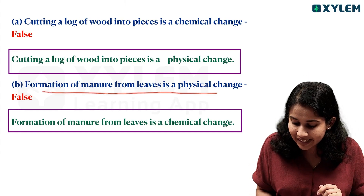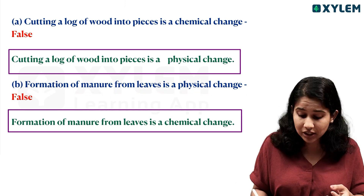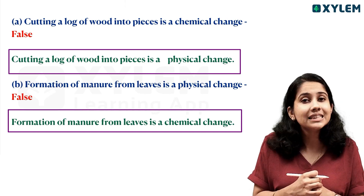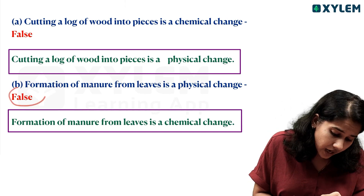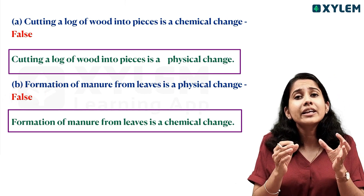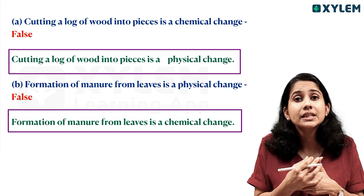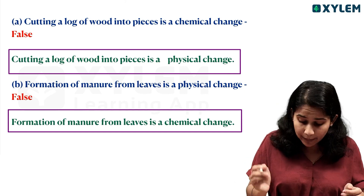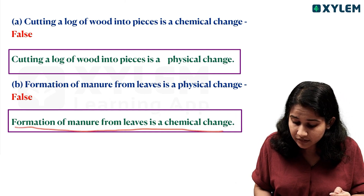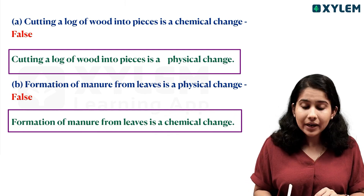Second statement — formation of manure from leaves is a physical change. We say that is false. It is actually a chemical change because new substances are formed. So the corrected sentence is: formation of manure from leaves is a chemical change.